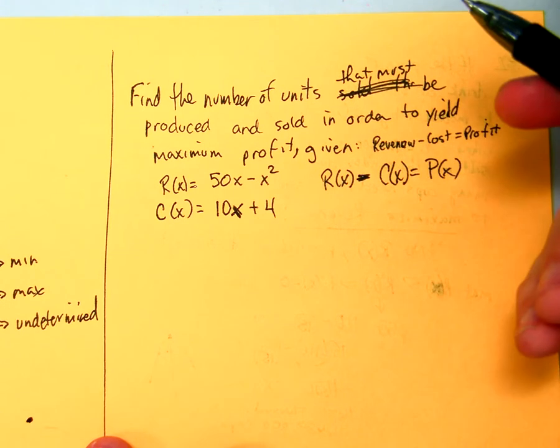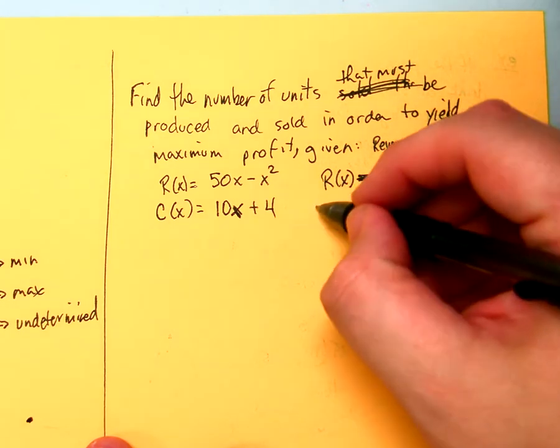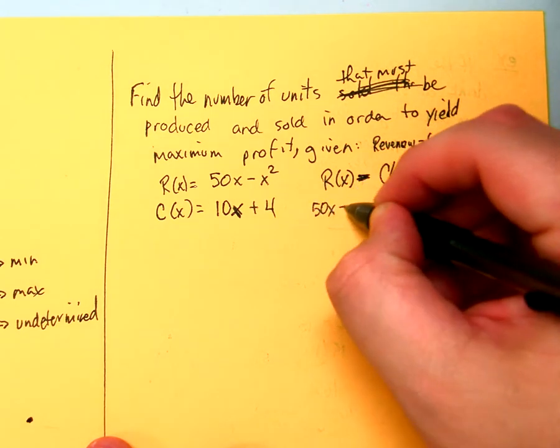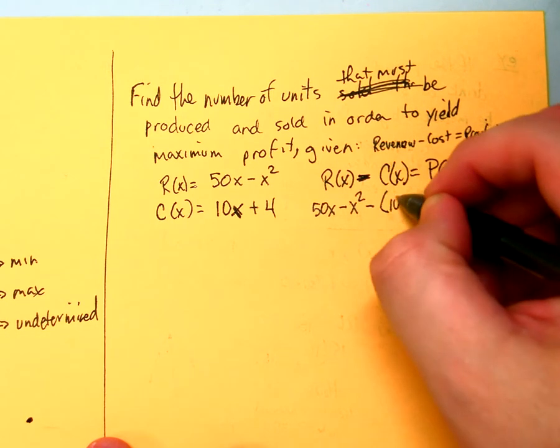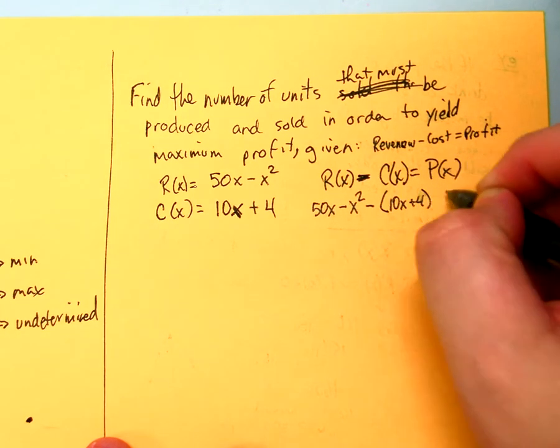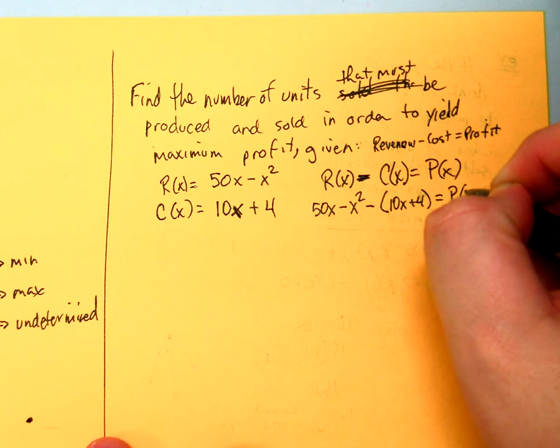Do I know our revenue? Alright, so I got 50X minus X squared minus my cost, which is 10X plus 4, is equal to P of X.